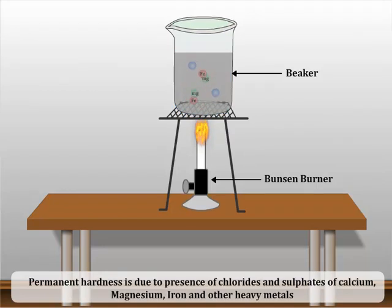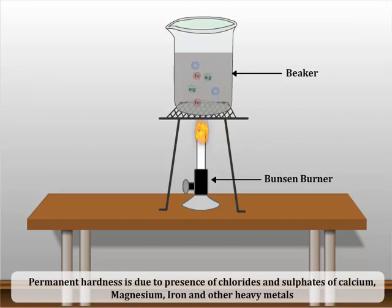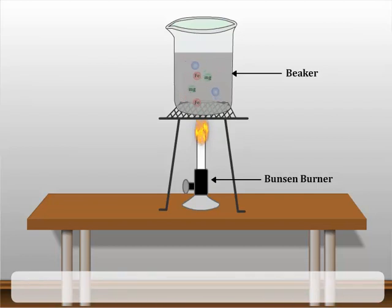Permanent hardness is due to the presence of chlorides and sulfates of calcium, magnesium, iron and other heavy metals. It cannot be removed by simple boiling.